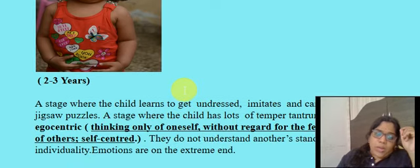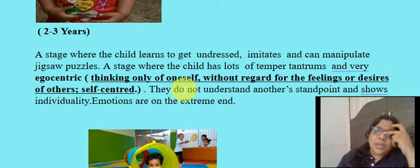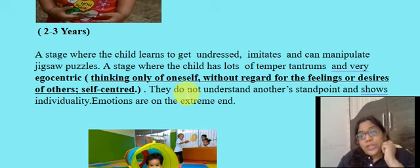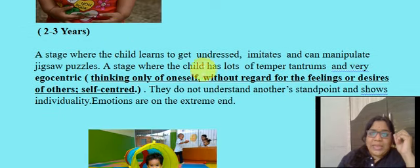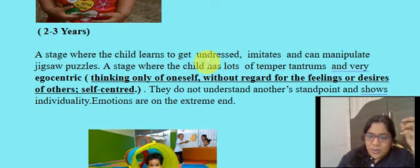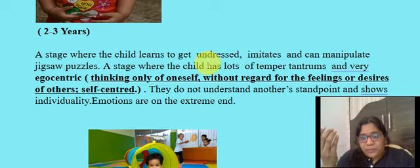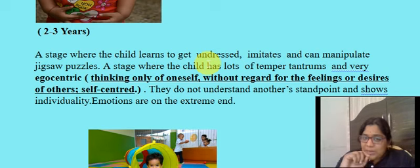Coming to two to three years: this is a stage where children learn to get undressed, they imitate other children, and they are very egocentric. They only think about themselves, regardless of the feelings or desires of others — they are very self-centered because they can't think about your perspective.